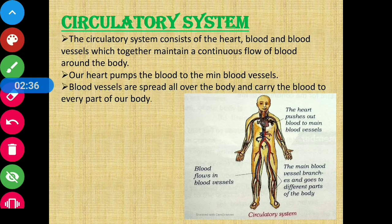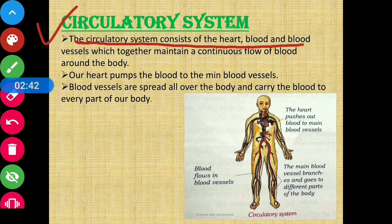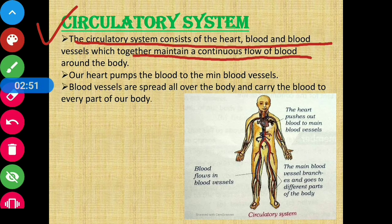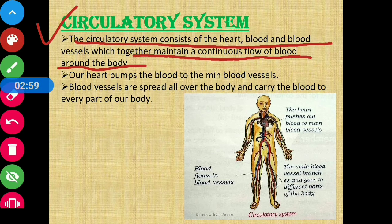Next is the circulatory system. The circulatory system consists of the heart, blood, and blood vessels, which together maintain a continuous flow of blood around the body.